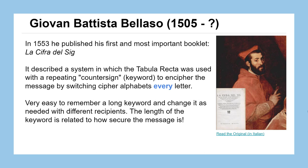The Vigenère cipher is somebody's name, but it was not invented by somebody named Vigenère. This idea was actually created by Giovanni Battista Bellasso, who was Italian, and Vigenère is French. This idea came around in about 1553 in a booklet — you can actually find the original Italian copy online. In it, a system was described in which the tabula recta was used with a repeating countersign or keyword that would switch the cipher alphabet mapping after every single letter in the message.